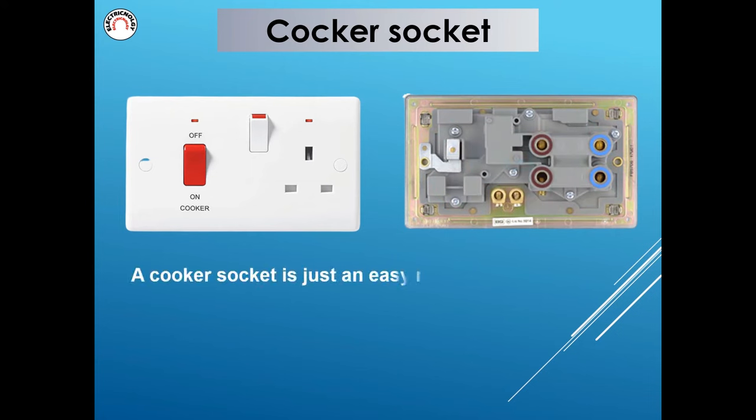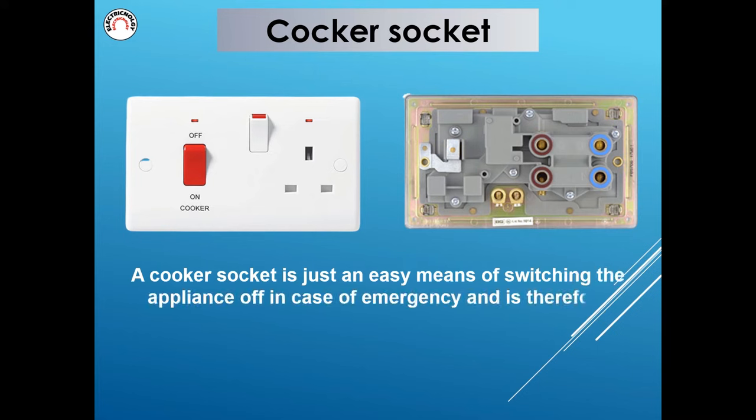A cooker socket is just an easy means of switching the appliance off in case of emergency and is therefore normally installed in an accessible location within a set distance from the appliance.